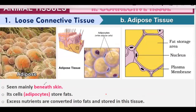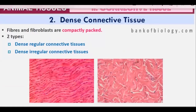Adipose tissue is located below the skin and stores fat. Its cells are called adipocytes. Excess nutrients are converted into fats and stored here. In people who have more fat, the adipose layer is thicker — layer order from outside is: skin (compound epithelium), then areolar tissue, then adipose tissue.